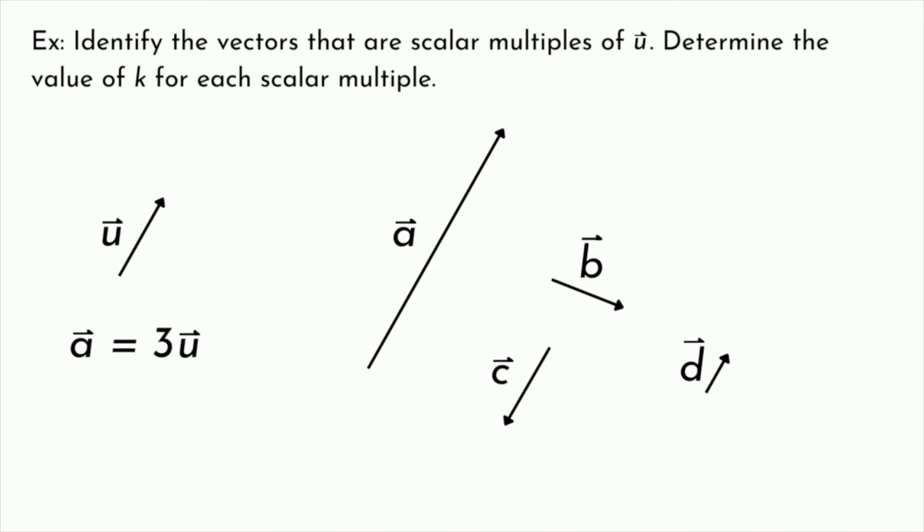Let's take a look at vector b next. So we can see that vector u and vector b are not parallel. And because of this, it doesn't matter what I multiply vector u by, I'll never be able to produce vector b. They might have the same magnitude, but they are not parallel. So we're going to say that these two vectors are not scalar multiples of one another.